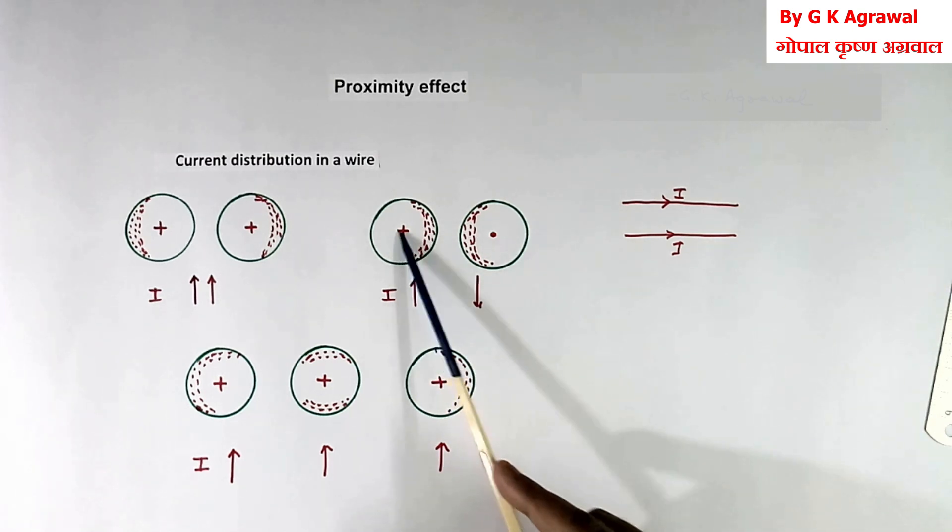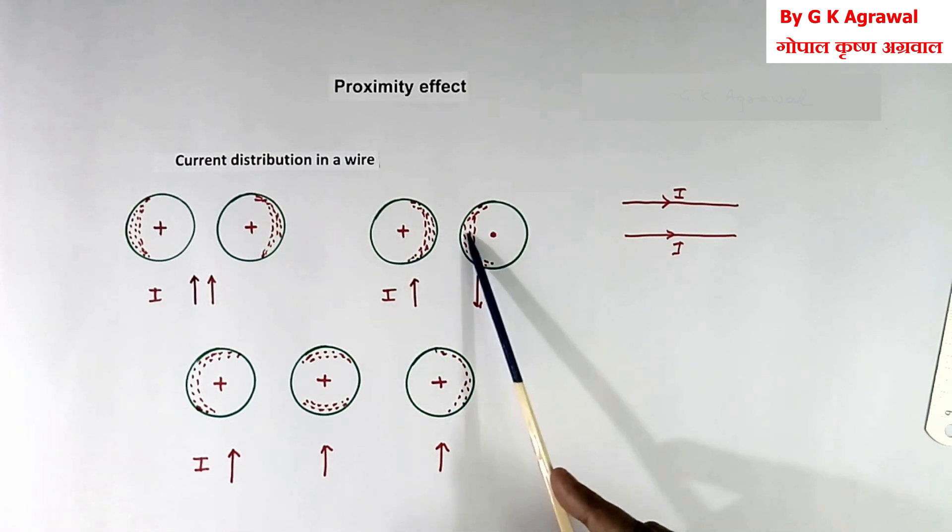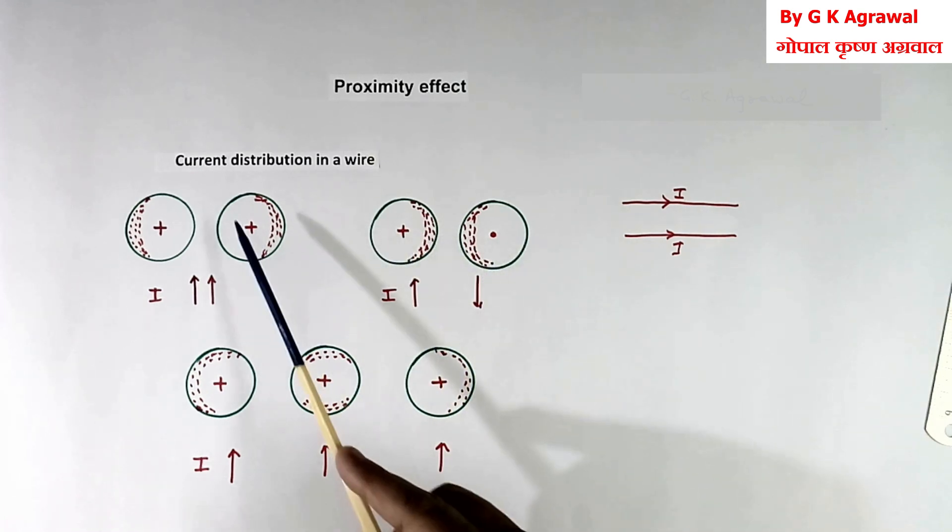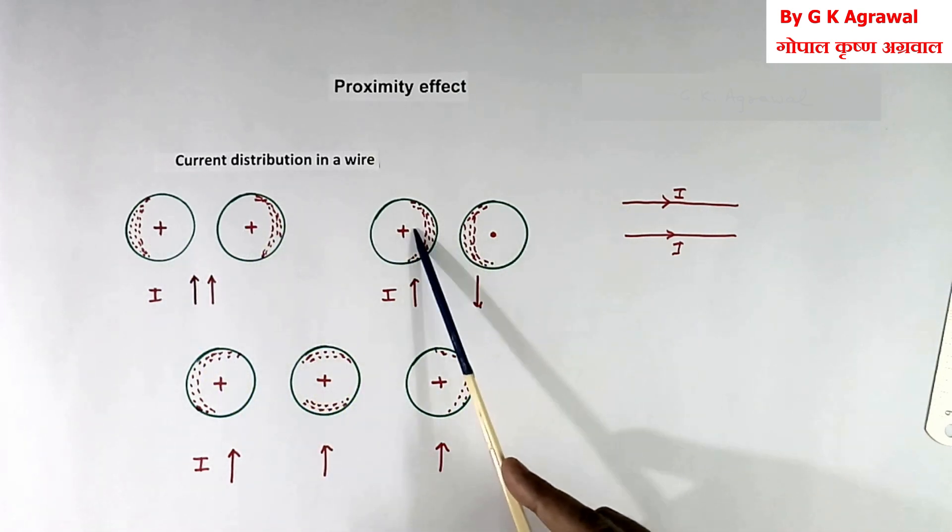Here current direction is reverse in both the wire. Then current will become close to each other. Here they were going away, here they are coming closer.